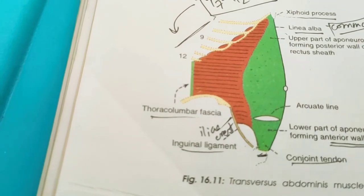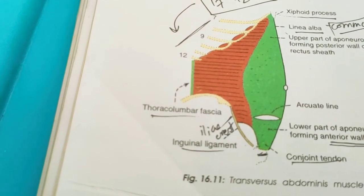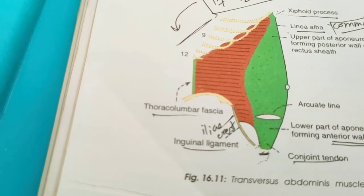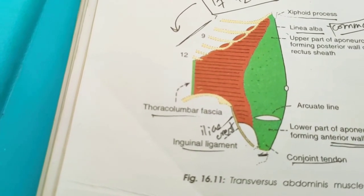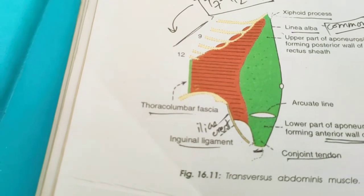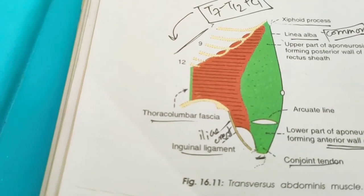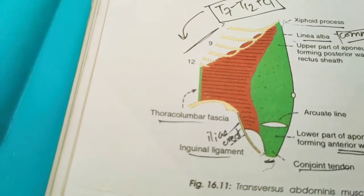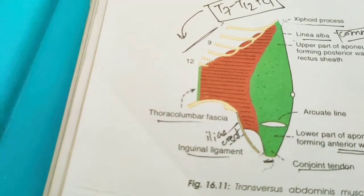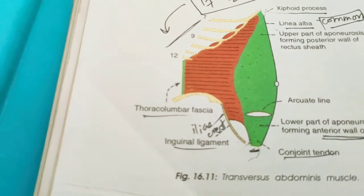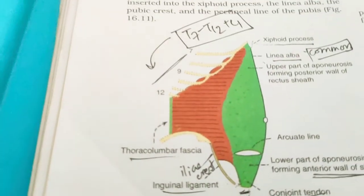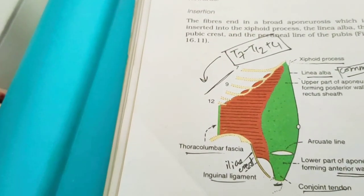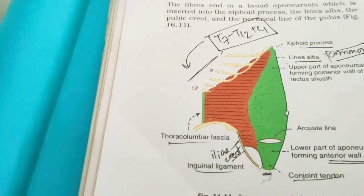By this we have completed the flat muscles. Next we will start with the vertical muscles, which are rectus abdominis and pyramidalis — the vertical muscles of the anterior abdominal wall.